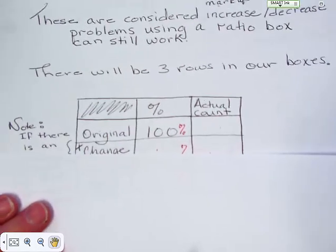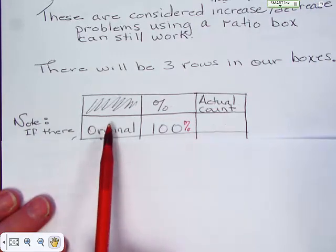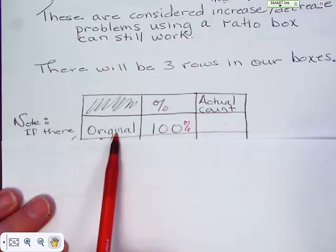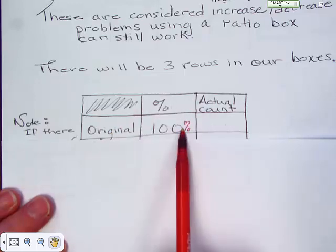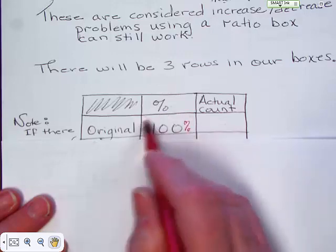So looking at an example we have the original, the original price, the original number, the original whatever they started with will always be a hundred percent. So you basically can just bet that this is going to be a hundred percent right here every time.